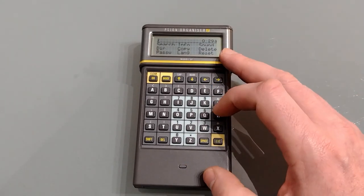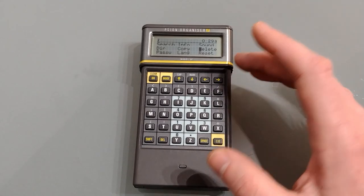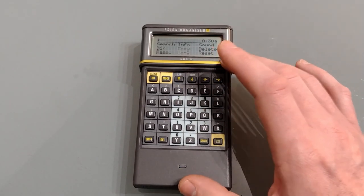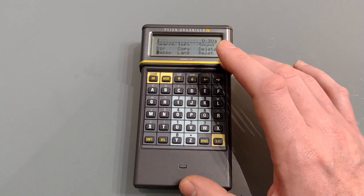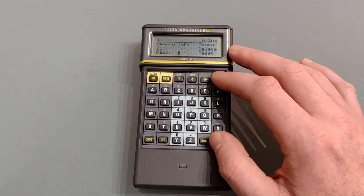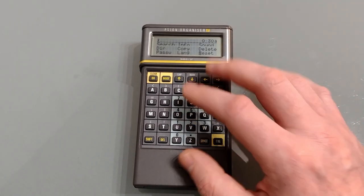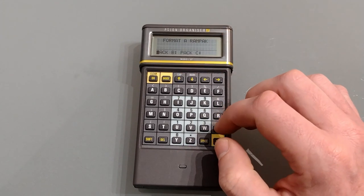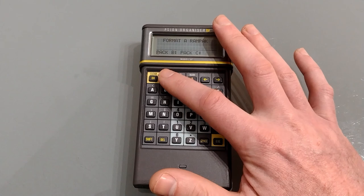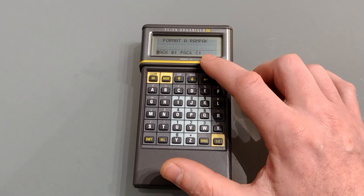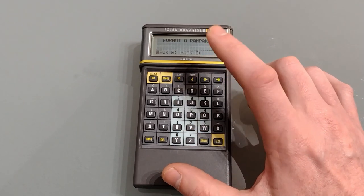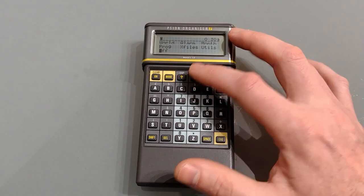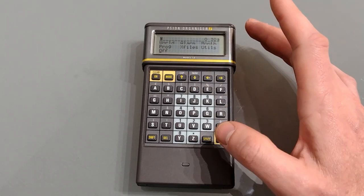Next we've got copy allowing you to move files to the data packs. Delete which deletes files. Password which allows you to set a device password. This is a new addition to the LZ and very useful. You can change the language. You can reset the device which will erase everything in the RAM. And you can select format which is for formatting RAM packs. It won't format flash packs and it won't format standard data packs. Standard data packs need to be UV erased. And finally we've got off which does what you might expect.